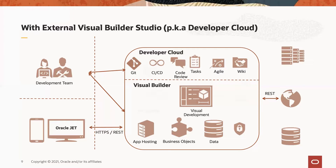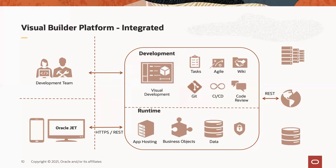What we did with Visual Builder Studio is move the visual development aspect into it, creating one development environment that integrates visual development, deep Git integration, deployment pipelines, code review, task management, agile processes, and wikis. From this single environment, you can deploy to multiple runtimes — your regular Visual Builder instances that host your application, business objects, and secure REST proxy. The development team works in Visual Builder Studio; users access applications from Visual Builder.